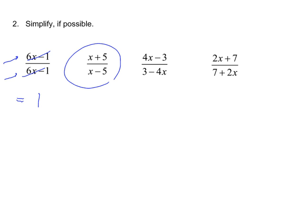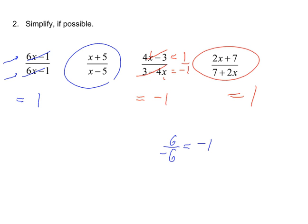You should recognize that if you have two opposites — for example, 6 over negative 6 — those always cancel, leaving you negative 1. Similarly, (4x minus 3) and (3 minus 4x) are opposites. If x equals 1, then 4 minus 3 is 1 and 3 minus 4 is negative 1, so that fraction equals negative 1. Whenever you have opposites, you can cancel them and get negative 1. And (2x plus 7) over (7 plus 2x) cancels to just 1.